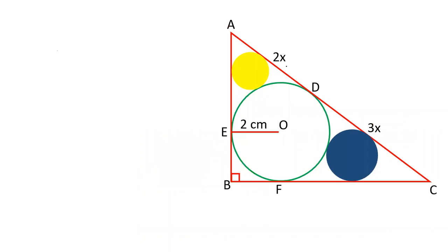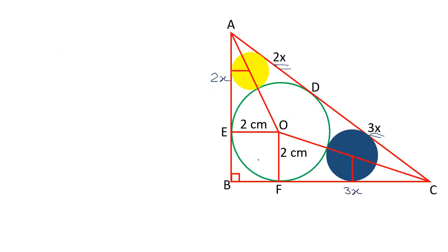First of all, we'll find the value of 2x and 3x, that is x. In this figure, AD and AE are tangents from an external point and therefore they are equal, so AD and AE are 2x each. CD and CF are tangents from an external point and therefore they are equal, so CF is 3x. Radius is perpendicular to tangent, so OE is perpendicular and OF is perpendicular. OEBF is a square and therefore each side equals 2.